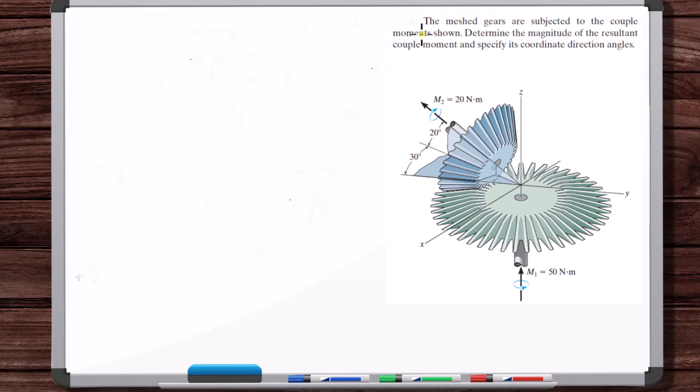The meshed gears are subjected to the couple moments shown. Determine the magnitude of the resultant couple moment and specify its coordinate direction angles. So these gears are meshed. You can consider this assembly here like a rigid body. All the forces are being rigidly transmitted from this shaft to this shaft with these gears meshed. So on this assembly, there's a couple moment from this shaft. Remember, moments or rotations are represented as vectors.